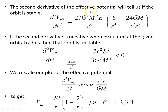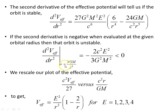The second derivative of the effective potential tells us whether the orbit is stable. If the second derivative is negative when evaluated at the orbital radius, the orbit is unstable. The second derivative of V_eff is this expression, and evaluating it at R = 3GM/c² gives a negative value. This confirms that the single circular orbit for photons in the Schwarzschild geometry is unstable.